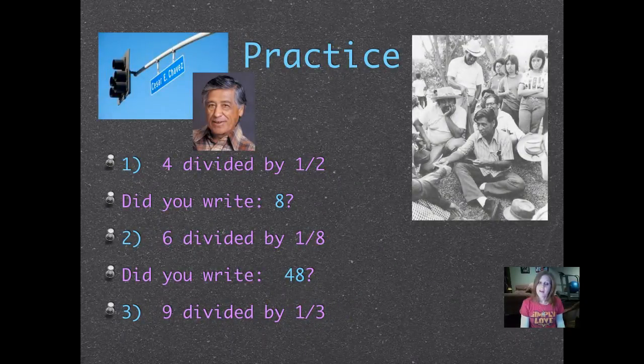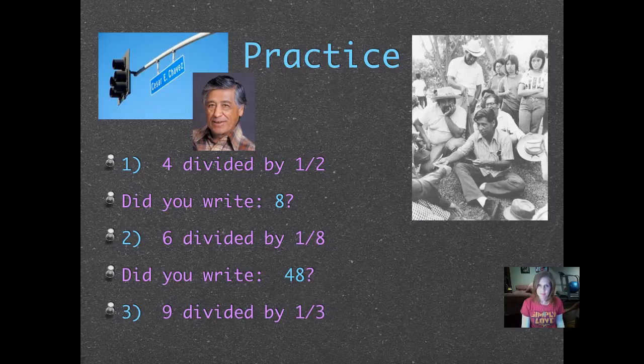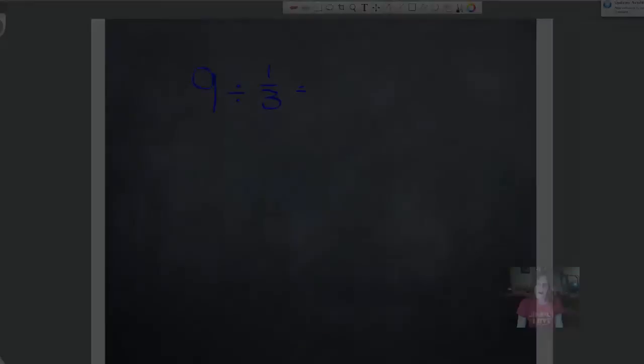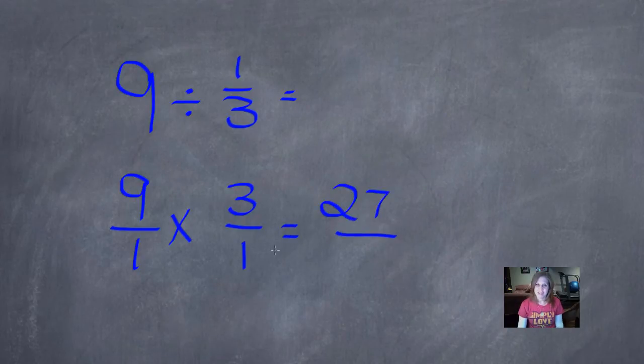Number three: nine divided by one-third. Pause it and push play when you're ready. Did you write 27? Let's work that one together. Okay, so we can rewrite the whole number nine as nine over one, and then we're going to multiply, which is the opposite of dividing, and we're going to find the reciprocal of one-third, which is three over one. Nine times three is 27, and one times one is one, which is an improper fraction, so 27 divided by one is the whole number 27.